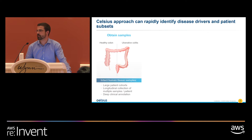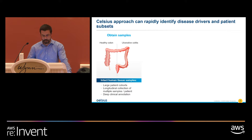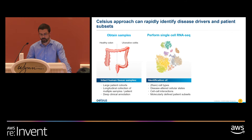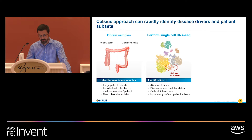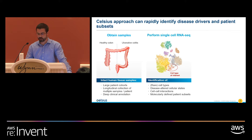At Celsius our approach has been to start from human patient samples — large numbers of human patient samples — to truly understand what forms the disease takes and what could be causing it in patients, not in animal models or in vitro models. Following this collection of samples, we perform single-cell RNA-seq to identify rare cell types, genes or cellular states causing disease, cell-cell interactions, and also importantly identify subsets of patients that might present various forms of the disease.